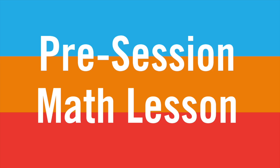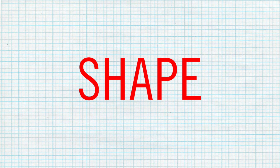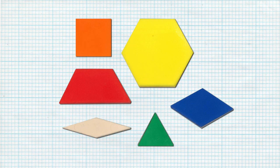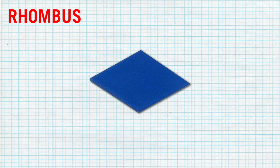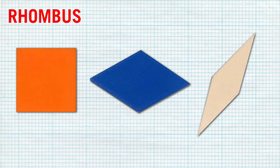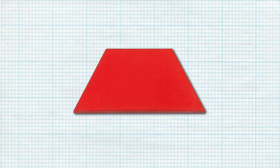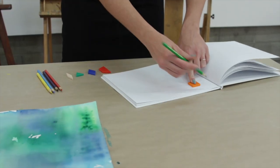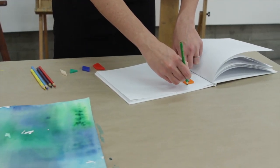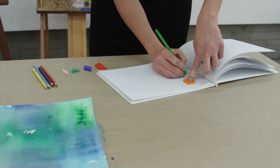Before we dive into session one, let's review some key math concepts. First, let's talk about shape attributes. Remember, the name of a shape is less about a specific form and more about the attributes. For instance, a rhombus is usually identified as looking like the blue pattern block. However, there are other formations that can represent a rhombus based on the attributes. Begin by teaching your students how to trace an object, using pattern blocks of triangles, squares, trapezoids, rhombuses, parallelograms, and hexagons.